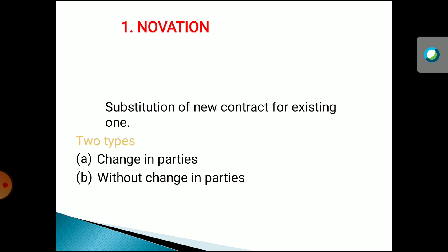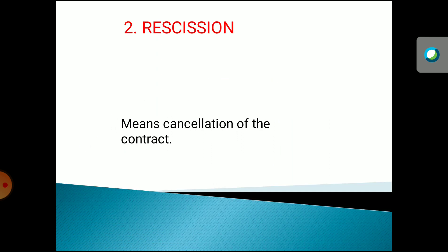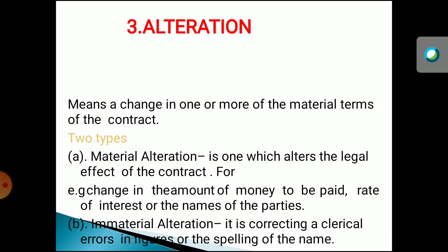Novation is done in either of two types: first, a change in the parties is done, or second, without change in the parties. Then comes rescission, which means cancellation of contract — by agreement both parties will sit together and mutually cancel the contract. This is called rescission. Alteration means one or more terms of the contract get altered, and due to alteration the contract will also get discharged.